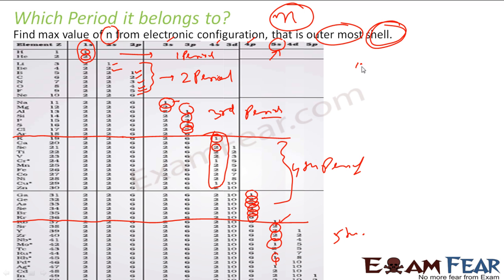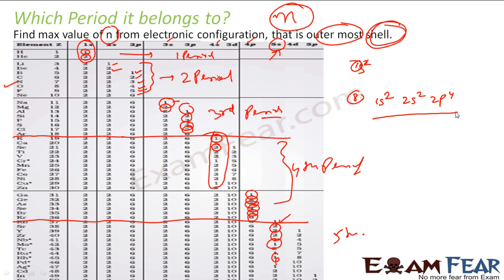For hydrogen it was 1s, so maximum n=1, giving the first period. Let's take oxygen as an example: atomic number 8, so the configuration is 1s², 2s², 2p⁴. The values of n go to 1, then 2, then 2. So the maximum value of n is 2, meaning oxygen is in the second period.